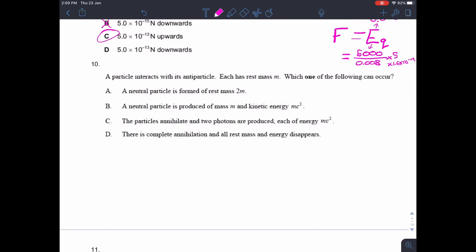Finally, question 10. A particle interacts with its antiparticle. Each has rest mass m. Which one of the following can occur? So let's take, for example, a proton and an antiproton. They're going to interact. What's going to happen?